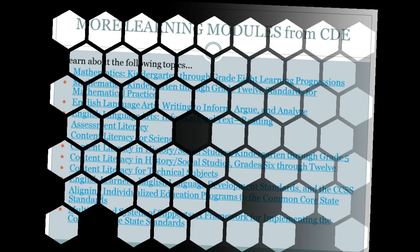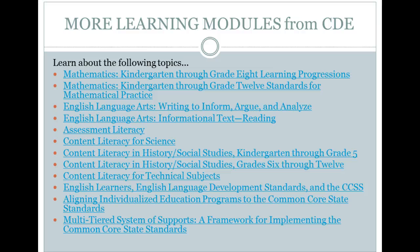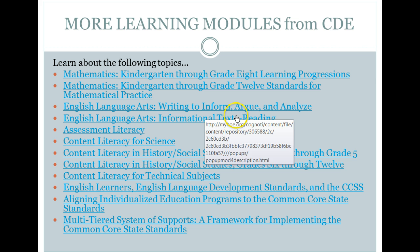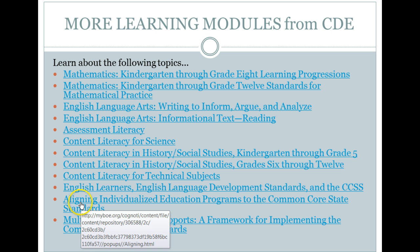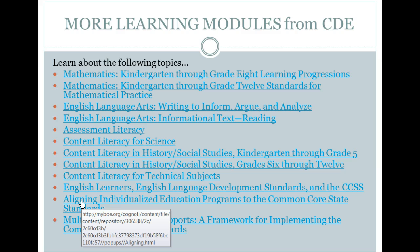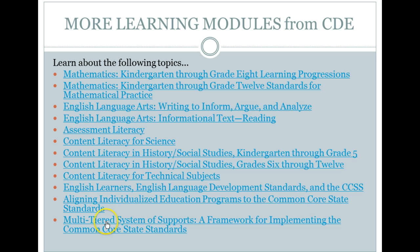There are more learning modules from the California Department of Education — a lot for mathematics and some for English language arts. They have modules on many key shifts: writing to inform, argue, analyze, and informational text. They have learnings for different subject areas, as well as English language learners, how to align IEPs to Common Core standards, and multi-tiered systems of support — which sounds like RTI.